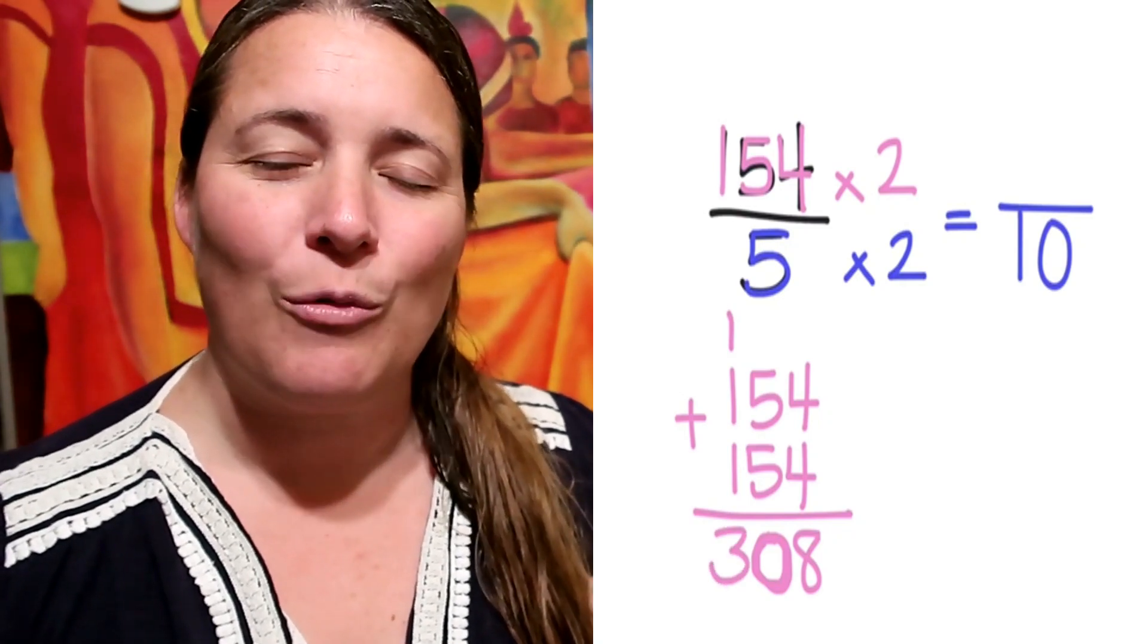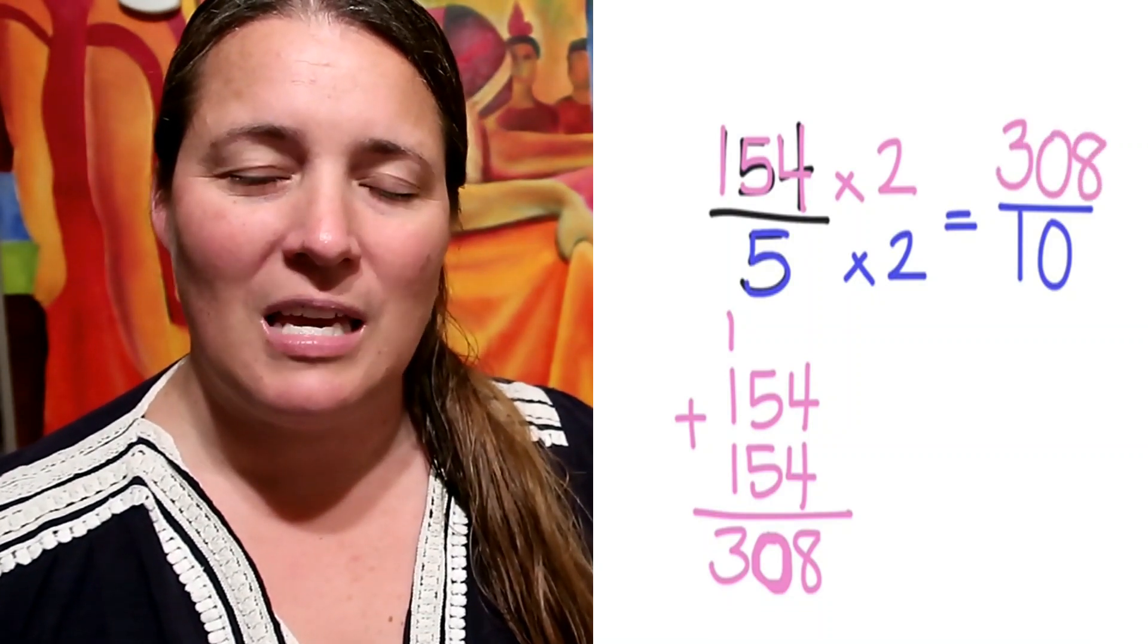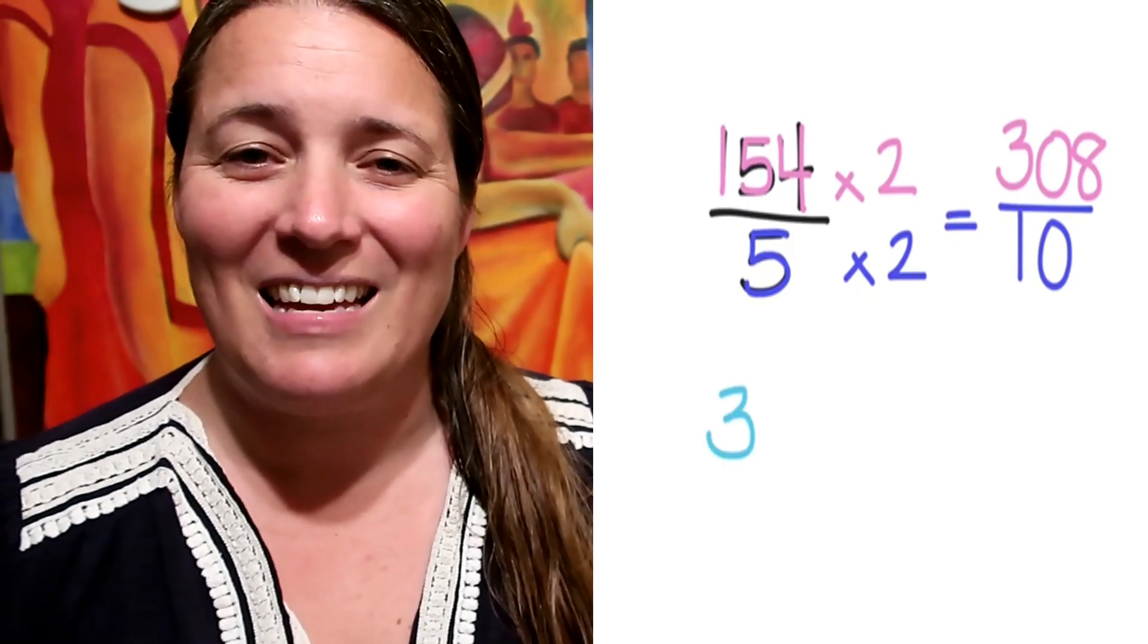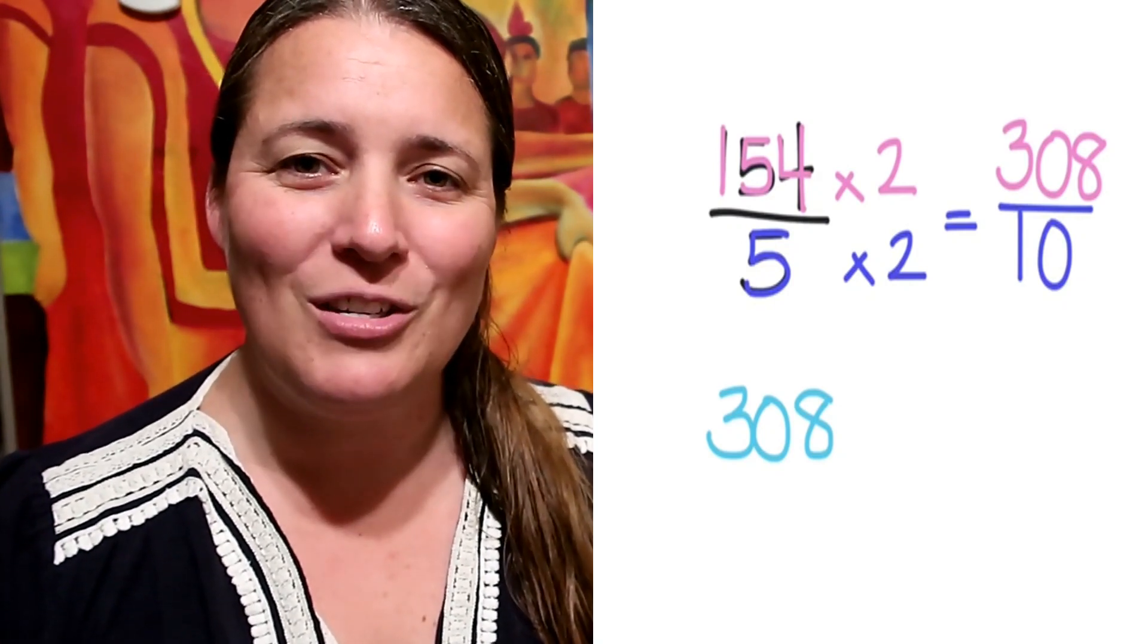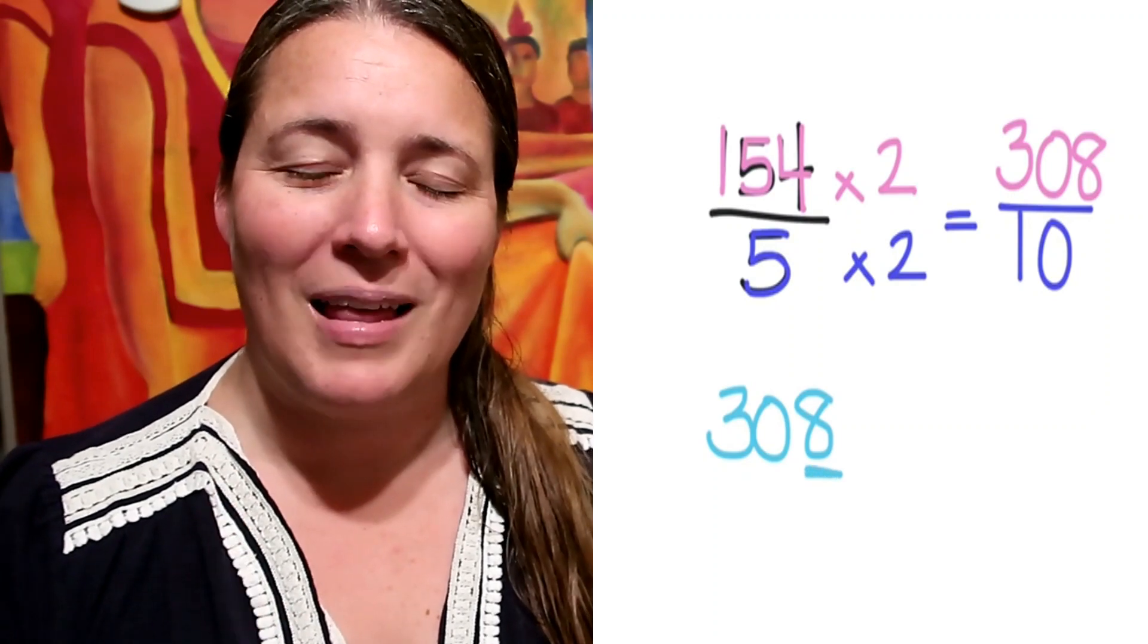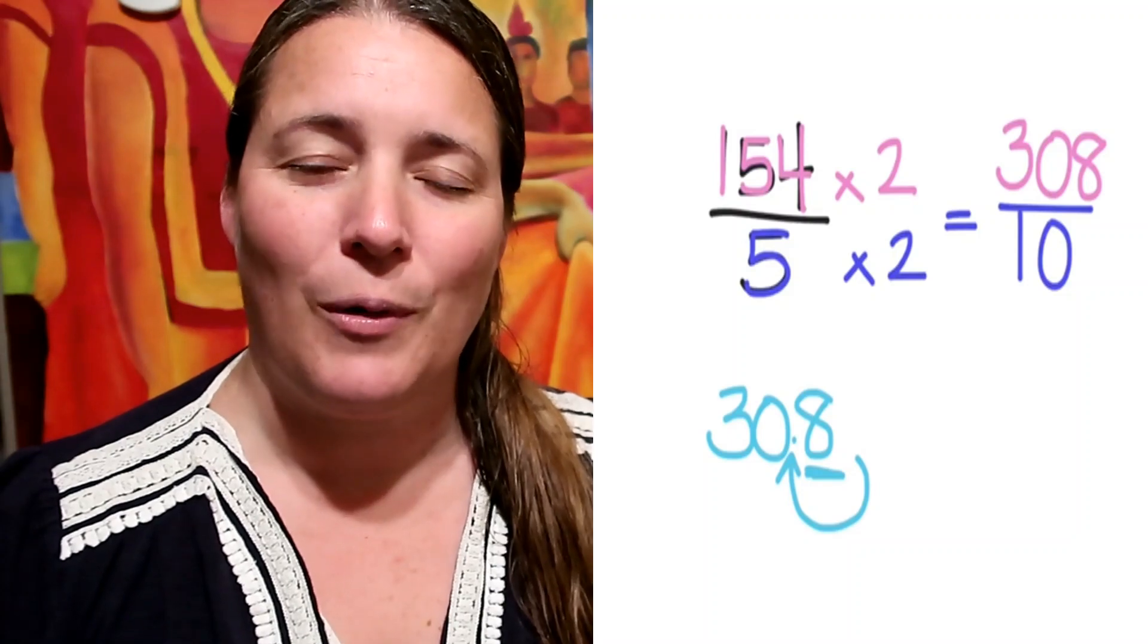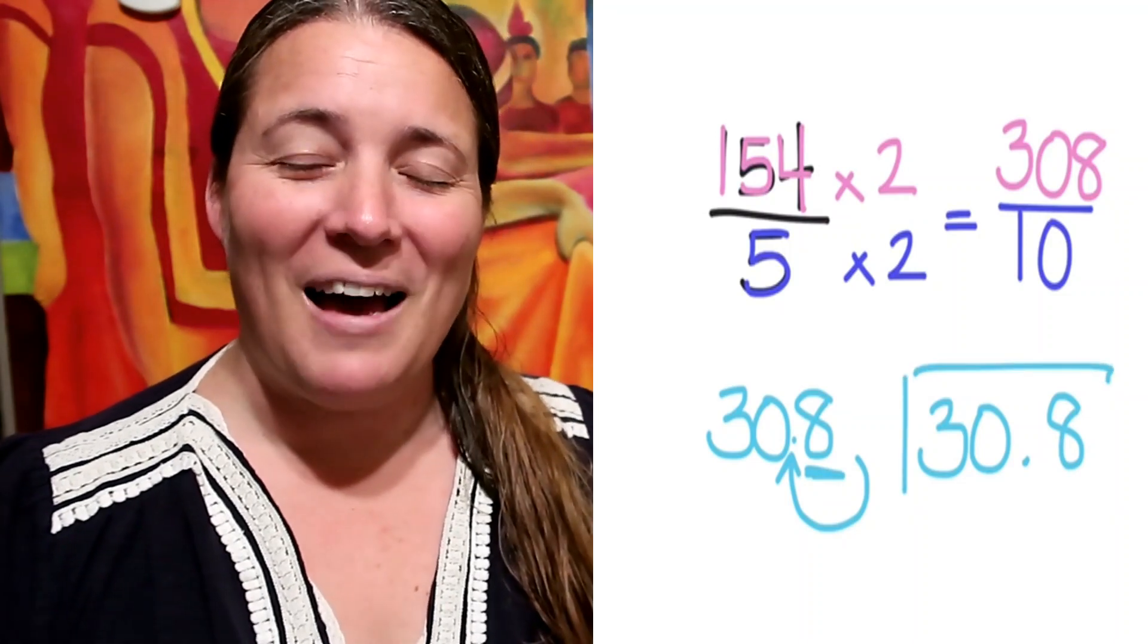We see now 308 divided by 10. So when I'm thinking about this, I look to see if both numbers end in a zero. And in this case, they do not. So I have one zero. What I'm going to do is move my decimal point one place. The number changes from 308 to 30.8. So if you want to divide 154 by 5, your answer is 30.8. Are you starting to see this? Dividing by 5 is actually pretty easy.